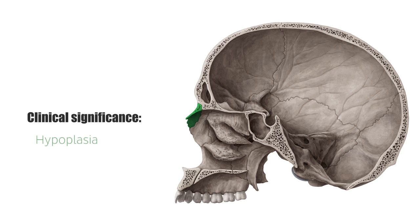Clinically, hypoplasia or absence of the nasal bones is a common feature in Down syndrome, trisomy 21, and other chromosomal abnormalities. That is why the detection of the nasal bone in ultrasound has become part of prenatal screening tests in many countries.